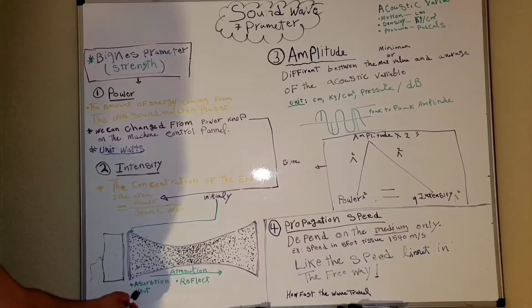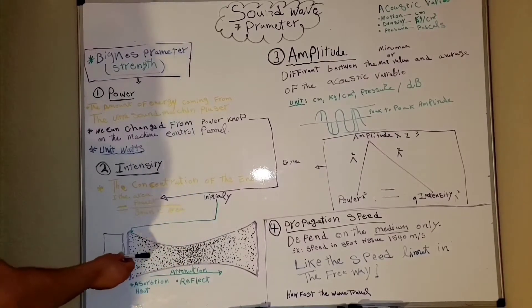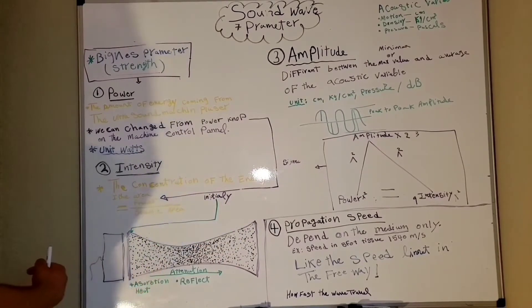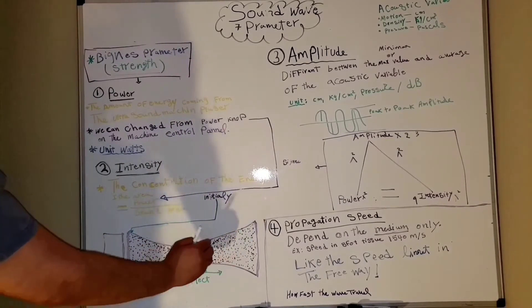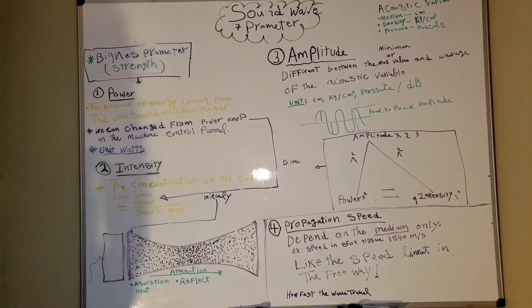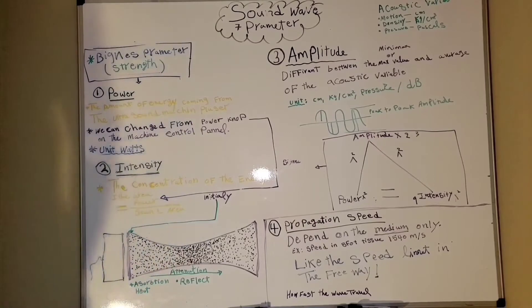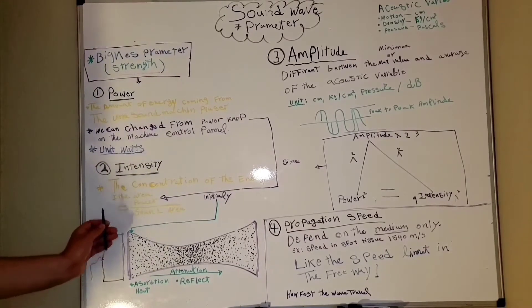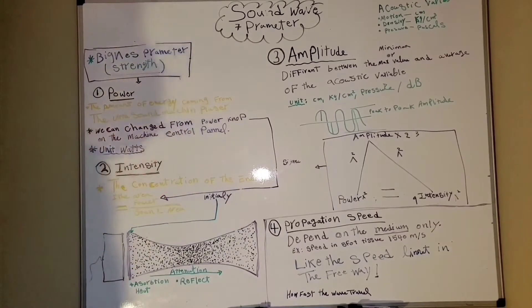This intensity changes when it travels through the medium because of attenuation. Attenuation comes as a result of absorption or reflection. When sound waves travel in the medium, some of this energy reflects back and some travels forward. The medium can also absorb some of this energy and convert it to heat. That's why we can only control the initial intensity from the control panel.